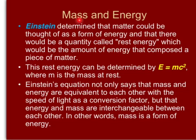Mass and energy. Einstein determined that matter could be thought of as a form of energy, and that there would be a quantity called rest energy, which would be the amount of energy that composed a piece of matter. This rest energy can be determined by E = mc², where m is the mass at rest.